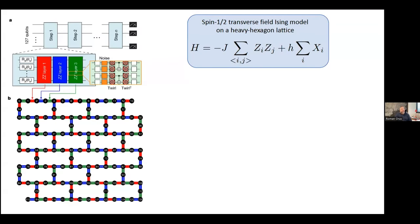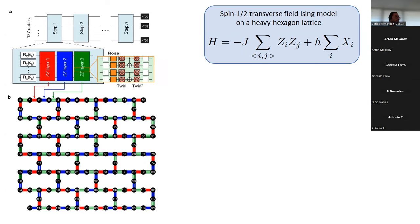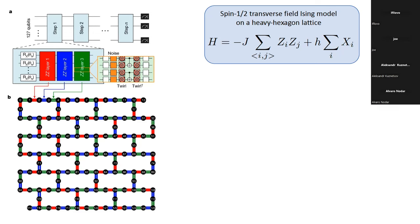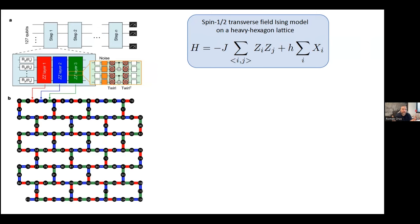What did they do in the experiment? They simulated the dynamics of a spin-1/2 transverse field Ising model on the heavy hexagon lattice, placing one spin on every node corresponding to one qubit. The Hamiltonian has ferromagnetic ZZ interactions between nearest neighbors and an external transverse magnetic field in the x direction. They do the time evolution from an initial state, and to implement this, they trotterize the time evolution operator — breaking it into different pieces — to build a quantum circuit.